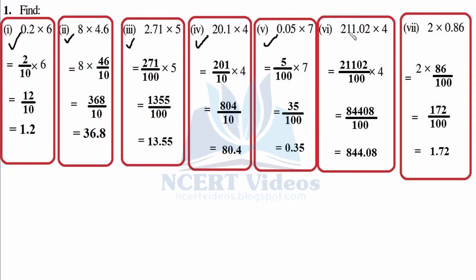For 211.02 × 4: write the number as it is, counting number of zeros — 2 — therefore 2 zeros into 4. 4 × 2 is 8, then 4 × 0 is 0, then 4 × 1 is 4, then 4 × 1 is 4, then 4 × 2 is 8. Writing the number as it is, counting number of zeros — 2 — therefore place 1, 2 decimal places.